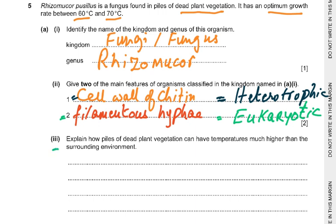Part 3 asks: explain how piles of dead plant vegetation can have temperatures much higher than the surrounding environment. There are two types of organisms which do decomposition: bacteria and fungi. They are the decomposers. When they respire they release energy, and the vegetation layer acts as an insulating layer — just like too many people in a room makes it hot because everyone is emitting heat at 37 degrees Celsius.